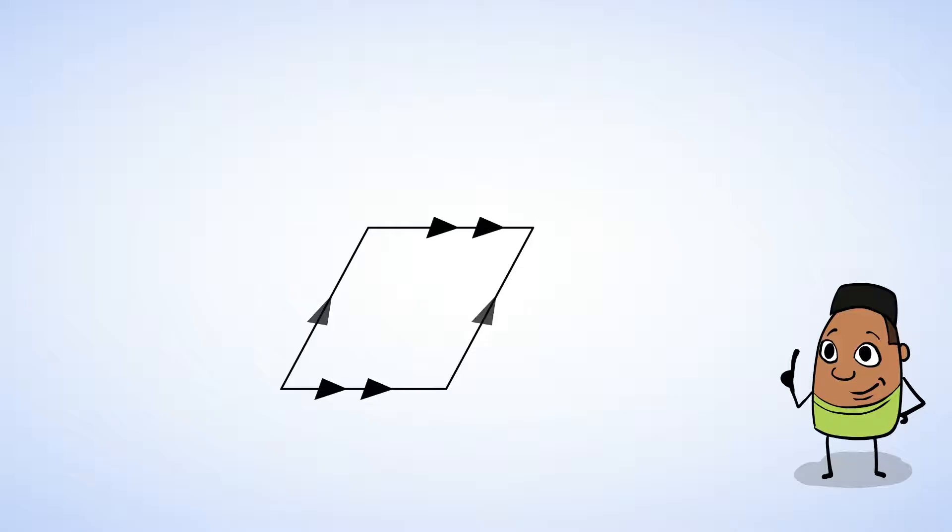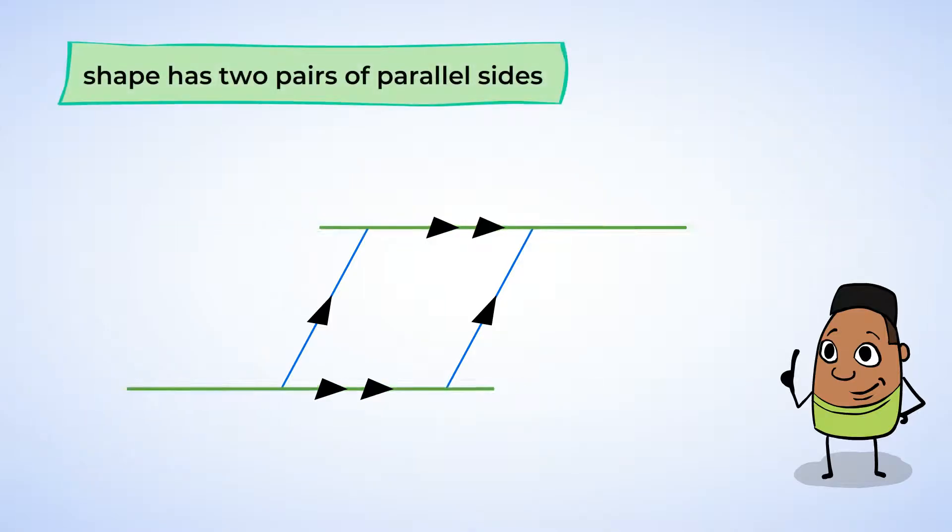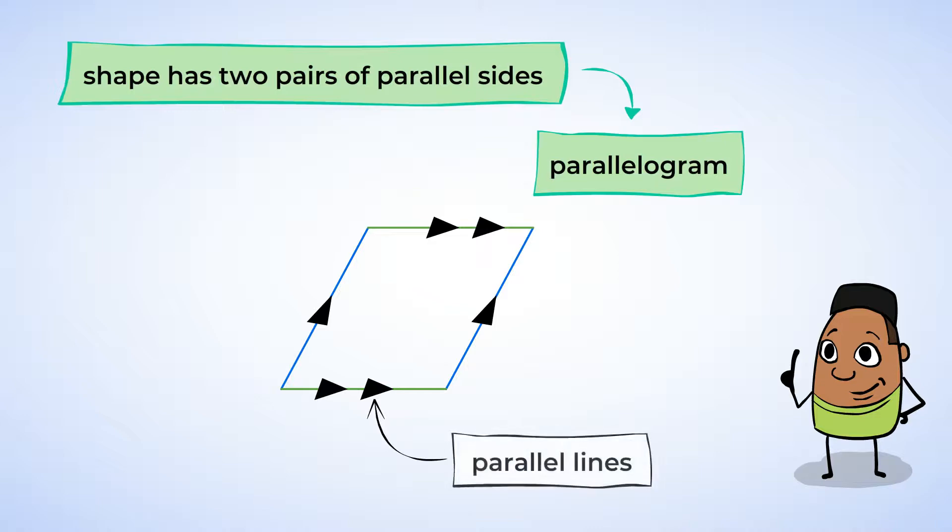Some shapes have parallel sides. This means that at any point the sides are the same distance from each other. Another way to think of parallel sides is that they will never ever intersect, even if the sides are extended on for infinity and forever. If the shape has two pairs of parallel sides, it's called a parallelogram. Notice the arrow symbols. This symbol indicates parallel lines.